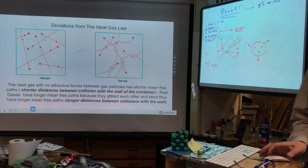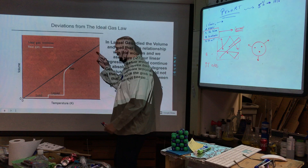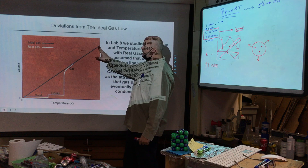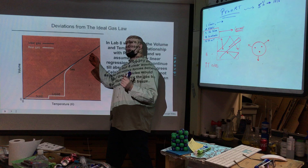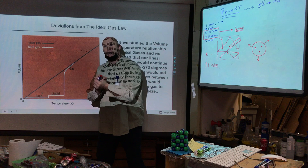We know these deviations exist because volume and temperature are proportionate — this is Kelvin temperature. At some point we'd expect volume to go down to zero, but that can't happen. As temperature drops, gases condense into liquids. Liquids have far, far smaller volumes for the same mass than a gas.